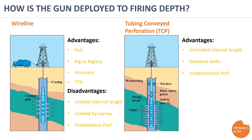TCP also provides the ability to leave the tubing in place after perforating underbalanced, which gives better clean-out of perforation tunnels and allows fluid flow to surface immediately after executing perforations. However, using this method requires multiple trips into the well, making it time-consuming and relatively slow. Another drawback is that a drilling or workover rig is required to run the guns into and out of the well.